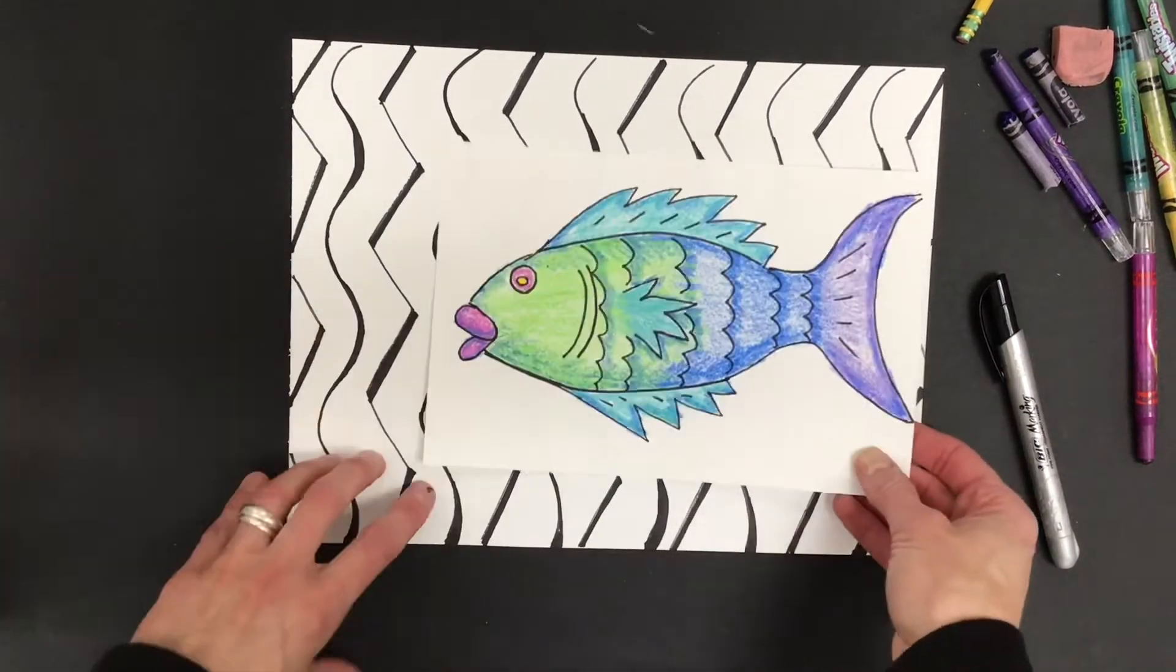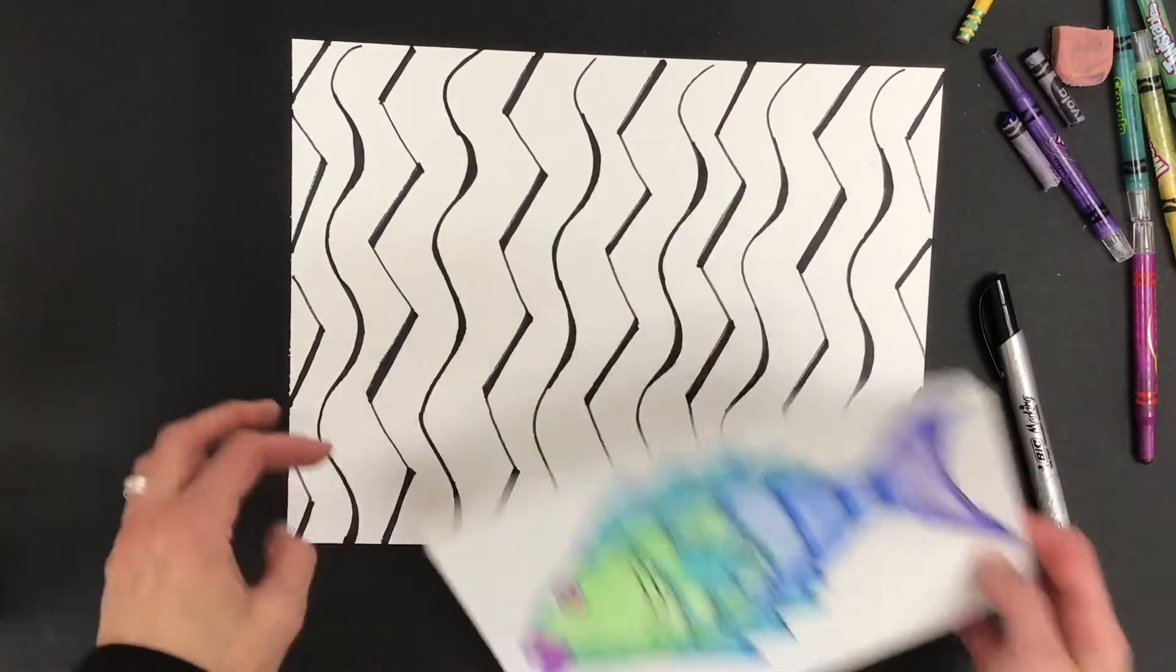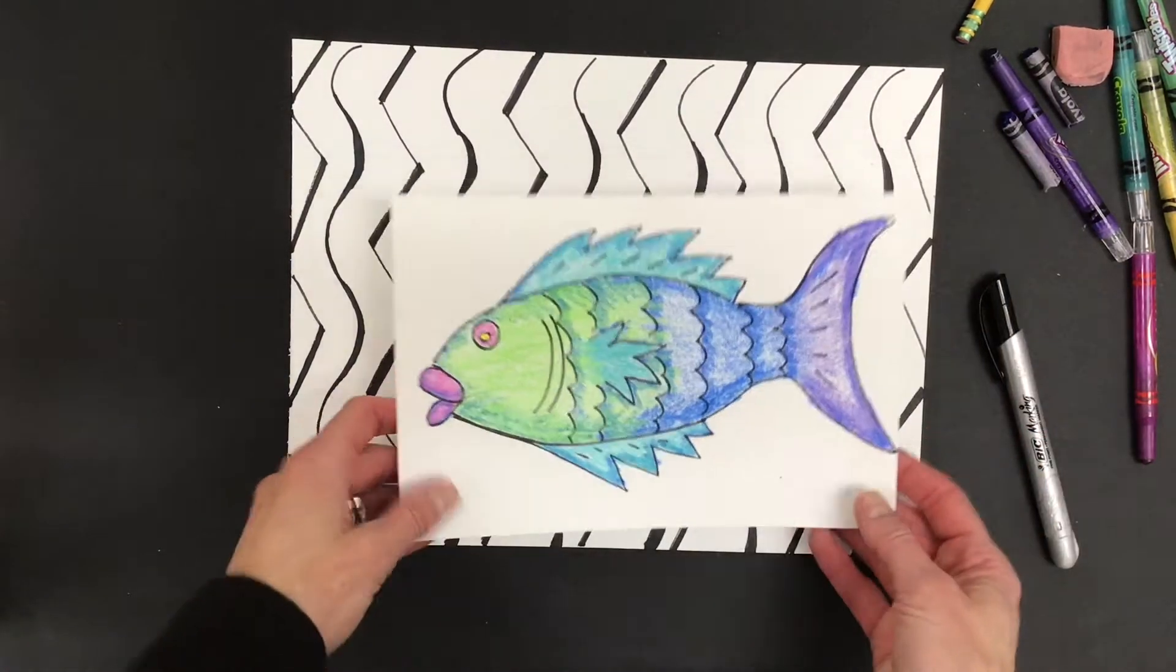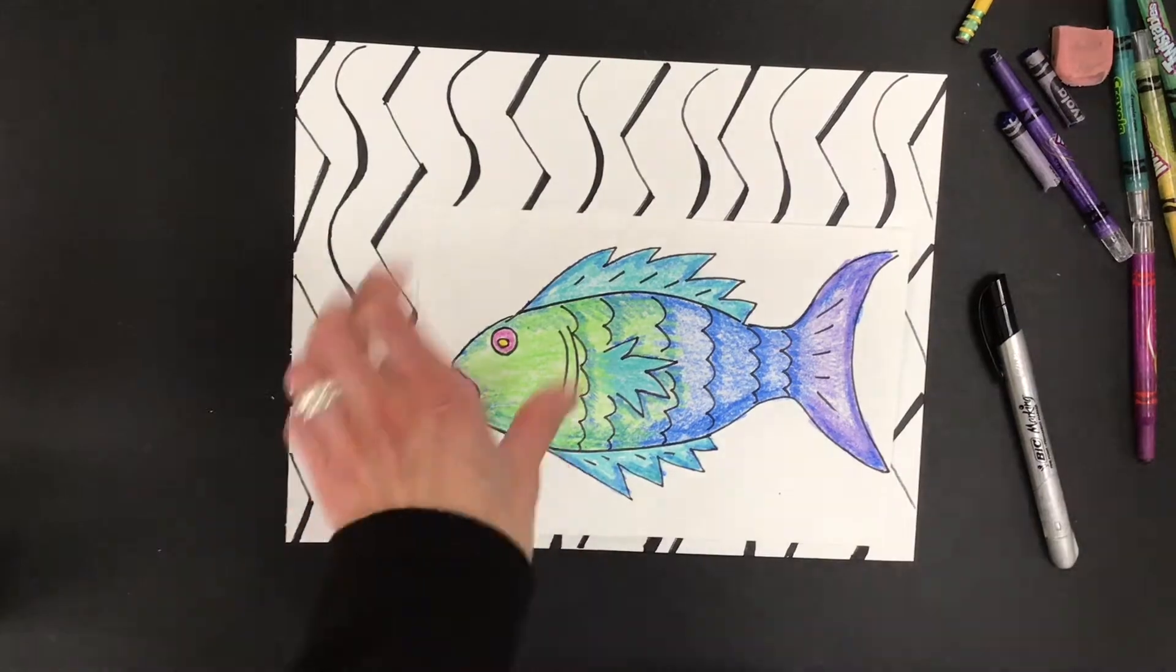So now I'm going to start putting these two things together. So I have my black and white patterned paper and I have my colored fish. So now I'm going to take my scissors.